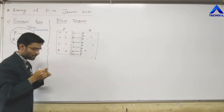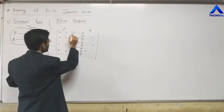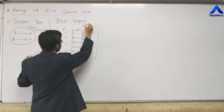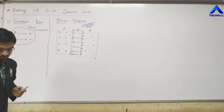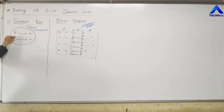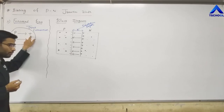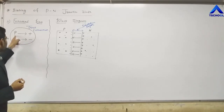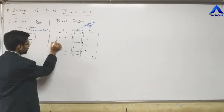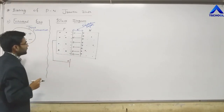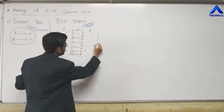In the last video lecture, we saw the PN Junction Diode — formed when we connect one P-type and one N-type semiconductor. A boundary called the junction is created between them. In P-type semiconductor we added trivalent impurities, and in N-type semiconductor we added pentavalent impurities. By increasing or decreasing the concentration level, we observe biasing of the PN Junction Diode — that is, connecting an external battery to the device.